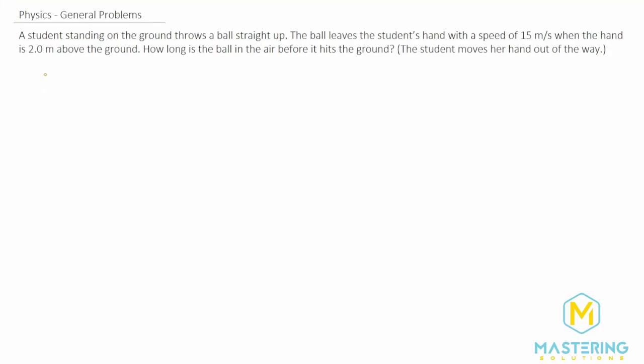Welcome to Mastering Solutions. This general problem says that a student is standing on the ground and throws a ball straight up. After it leaves the student's hand, it has a speed of 15 meters per second when the hand is two meters above the ground, and we need to figure out how long it is in the air.